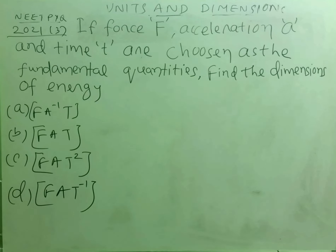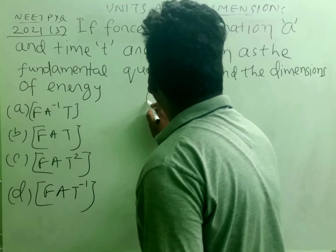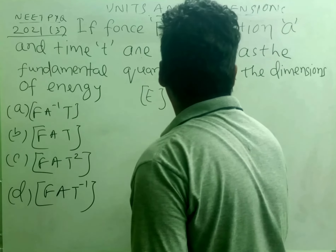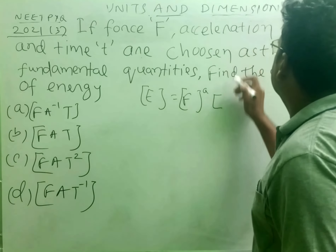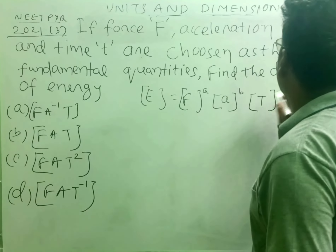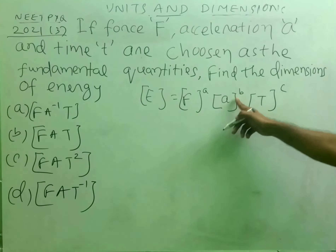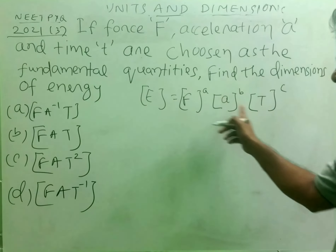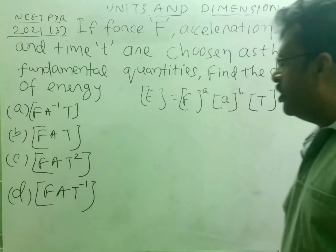The question: if force F, acceleration a, and time t are chosen as the fundamental quantities, find the dimensions of energy. We will write the equation: E is equal to F to the power a, acceleration a to the power b, and time t to the power c. We have to find out the exponents a, b, and c, so that we can write the energy dimension in the form of F, a, and t.